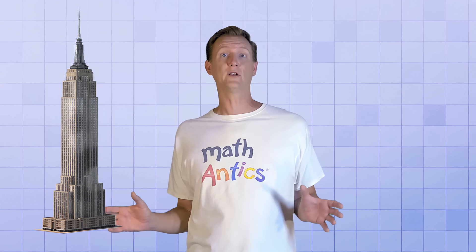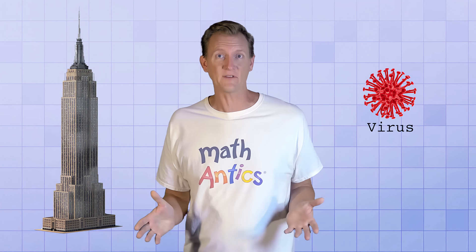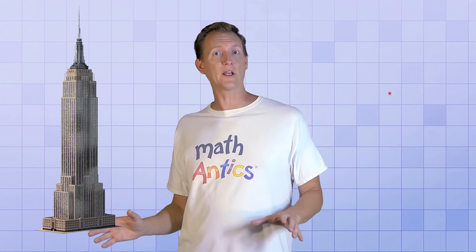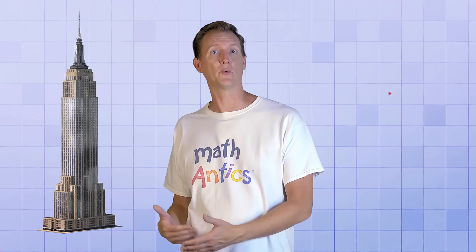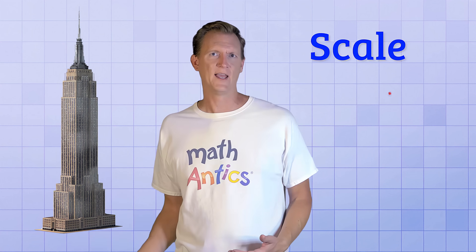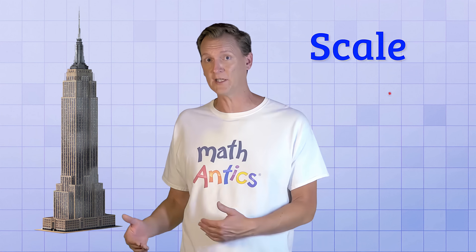Well, we could, but the main reason we have different units to choose from is that there's a huge variety in the size of objects that we might want to measure. Some are really, really big, while others are so incredibly small that you can't even see them. This wide range of possible sizes is called the relative scale of objects, and it's helpful to choose a unit of measurement that's a good match for a particular object's scale.